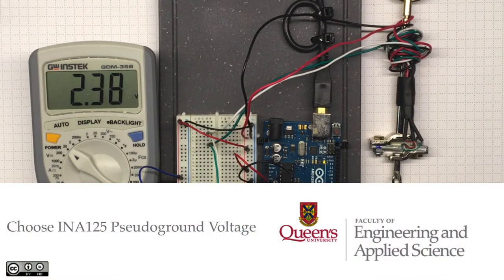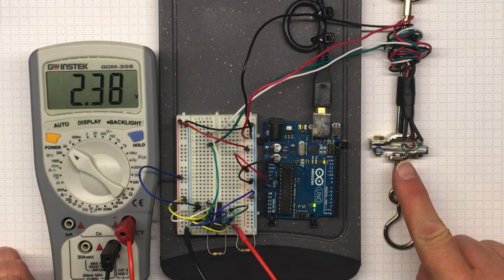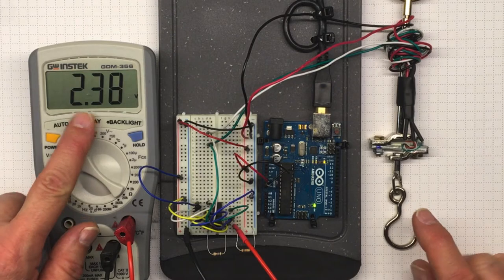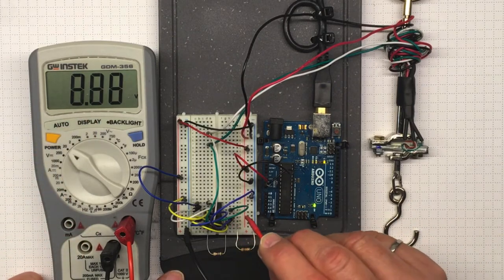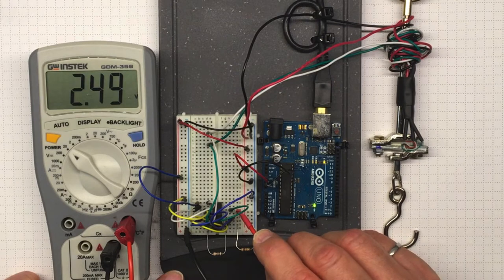Now what does it mean that we've wired this up with a pseudo-ground setting? You'll notice when there's no load on the load cell, we're getting an output that's close to 2.5 volts. And that's because we've plugged our pseudo-ground connection into the 2.5 volt source.